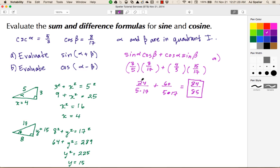Now let's work on part B. Again, let me switch colors to keep everything separate. For part B, I'm using cosine with a difference, so I'll use the difference formula for cosine. This is cosine alpha cosine beta plus sine alpha sine beta.